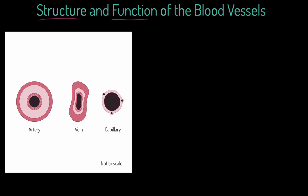I've got the three primary sets of vessels here in the image: arteries, veins, and capillaries. There are some slight variations on arteries and veins that you might study in future, but these are what we want to be thinking about for now. So, our arteries — let's go there first.